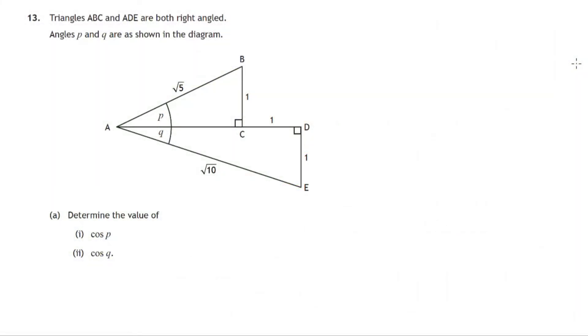Hi, Mr Cosi here. In this question we're showing a couple of right angle triangles, various lengths given to us. There's angle P, there's angle Q. And first of all, in part A, we're to determine the value of cos P and cos Q. So let's go ahead and see what we can do with that.